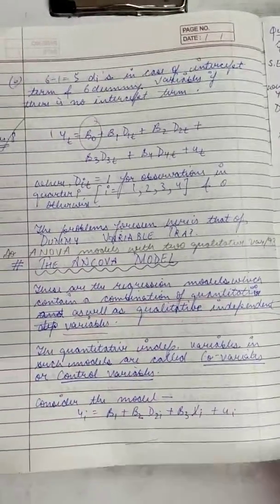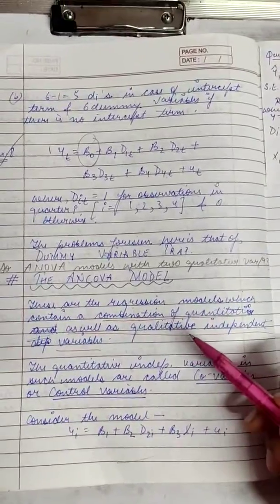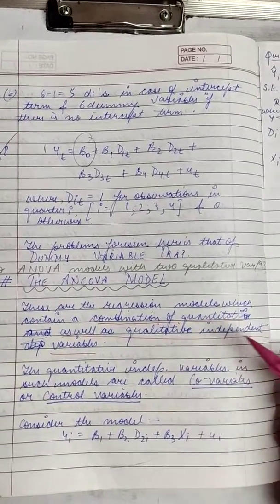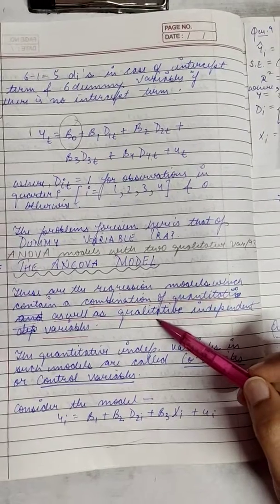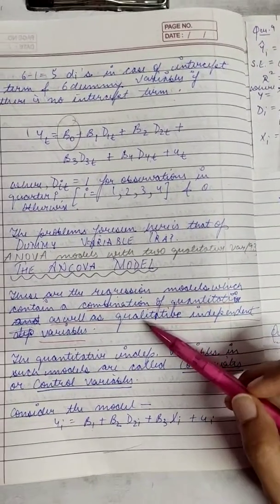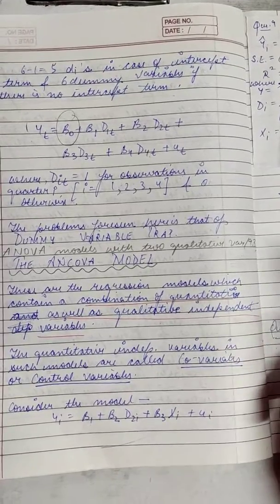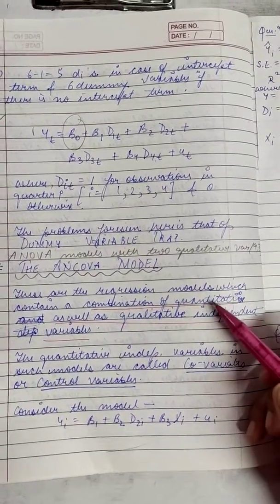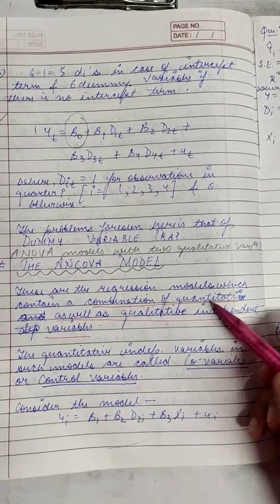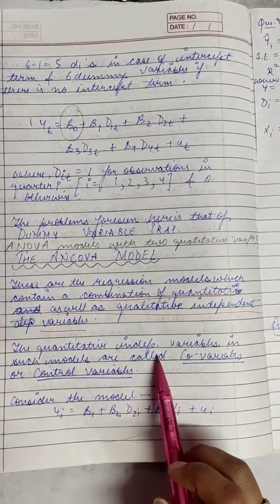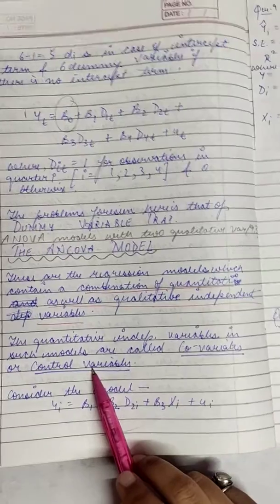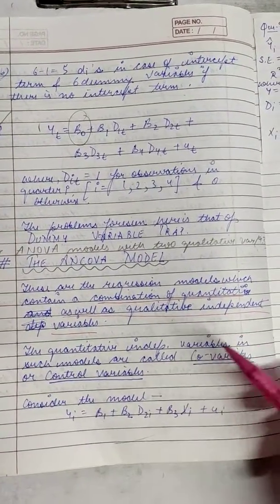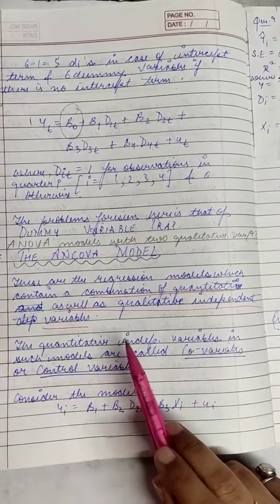The next topic in our series is the ANCOVA model. These are regression models which contain a combination of quantitative as well as qualitative independent variables. Dummy variables are the qualitative variables, falling in the category of nominal variables, while quantitative variables are variables like income, age, weight, etc. The quantitative independent variables in an ANCOVA model are also called covariates or control variables.